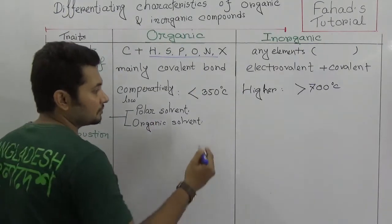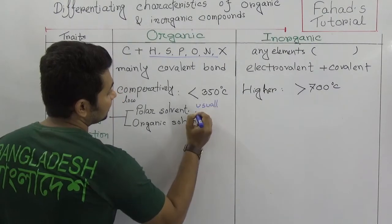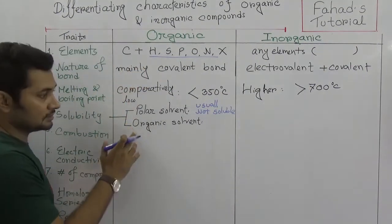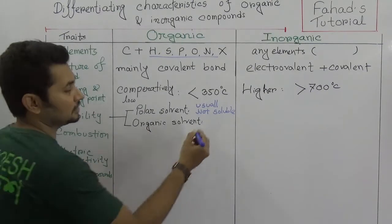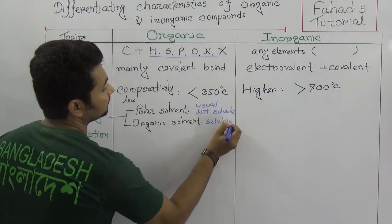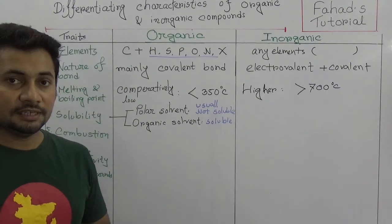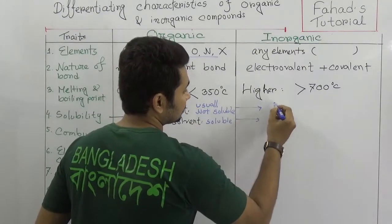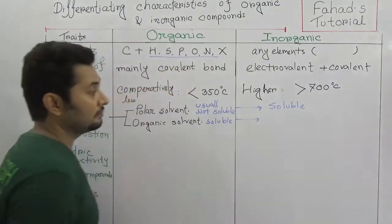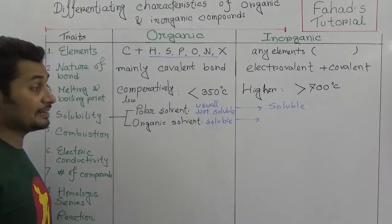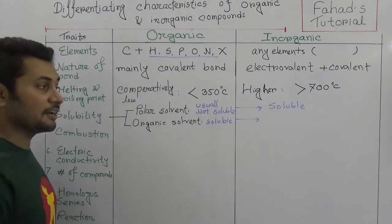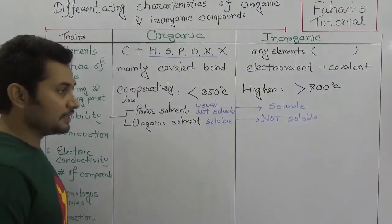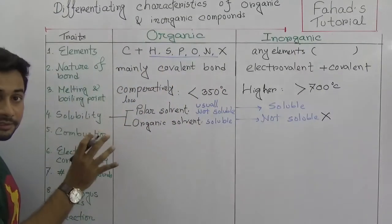So for organic compounds in polar solvents: usually not soluble. But in organic solvents like benzene and ether, organic compounds are soluble. For inorganic compounds it is just the reverse — in polar solvents they are soluble, but in organic solvents like benzene and ether, inorganic compounds are not soluble.